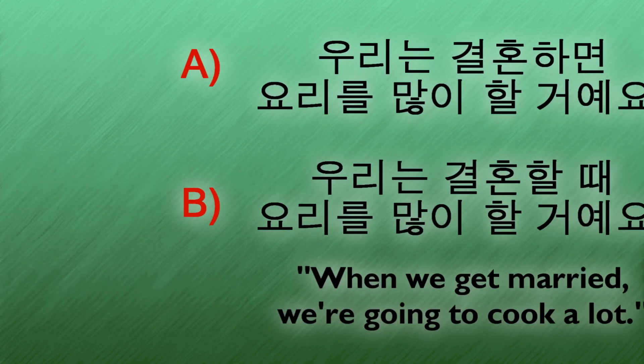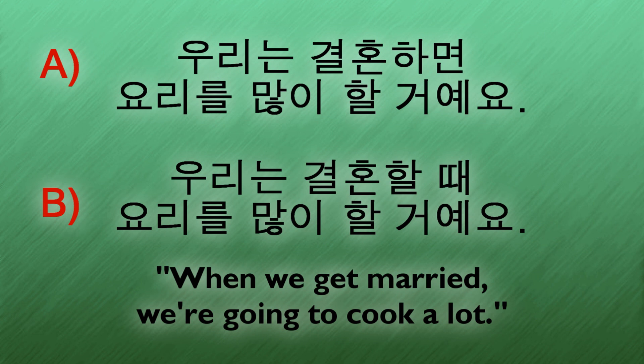Before I give you some more examples, let's compare the two forms. Here's a sentence written with both the 면 and 때 forms. 우리는 결혼하면 요리를 많이 할 거예요, or 우리는 결혼할 때 요리를 많이 할 거예요. See if you can guess which sentence is more correct. They're both grammatically correct, but one of them sounds rather silly. Take 10 seconds to think about it while I play some soothing jazz music.